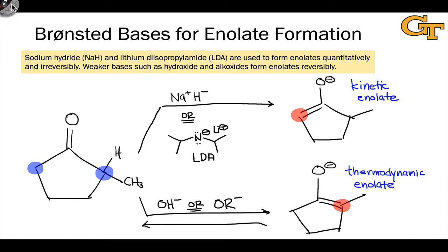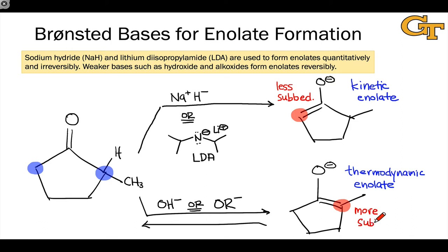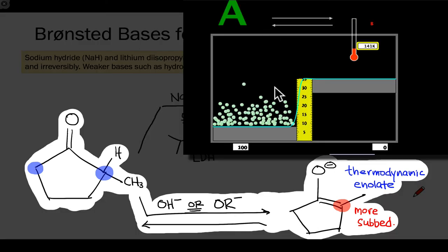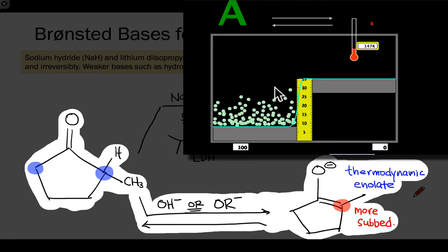In summary, if we want to generate the less substituted enolate of a ketone with two different alpha carbons, we use a very strong kinetic base — sodium hydride or LDA. If we want to generate the more substituted enolate selectively, we use a relatively weak base — hydroxide or alkoxide.